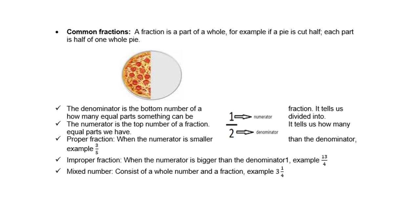Proper fractions: when the numerator is smaller than the denominator, example 3 over 5. Improper fractions: when the numerator is bigger than the denominator, example 13 over 4. A mixed number consists of a whole number and a fraction, for example 3 and a quarter.